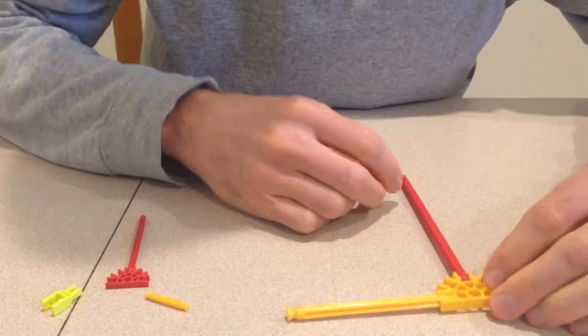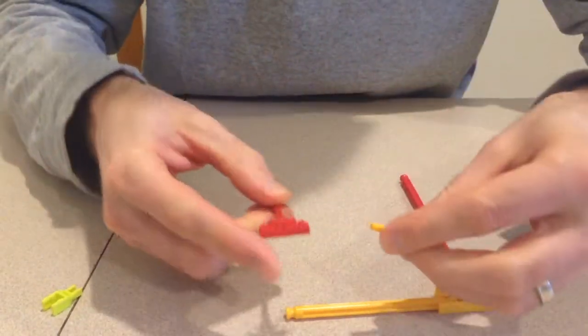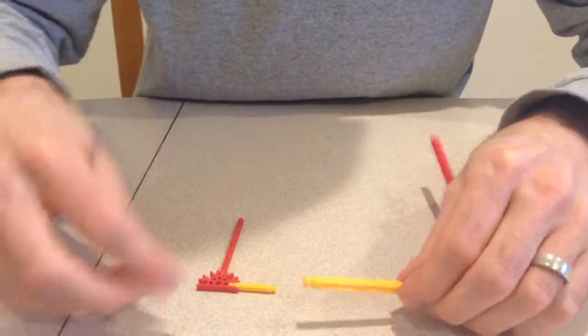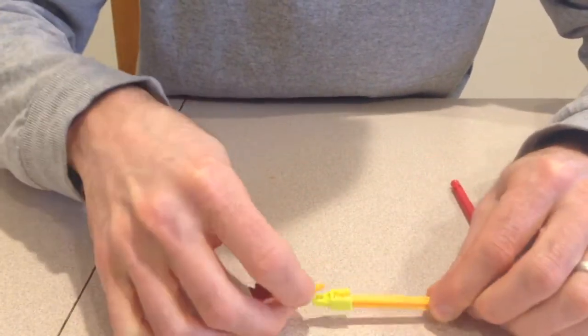K'nex pieces just snap together. They come in regular sizes and micro sizes. Adapters are needed to hook them together.